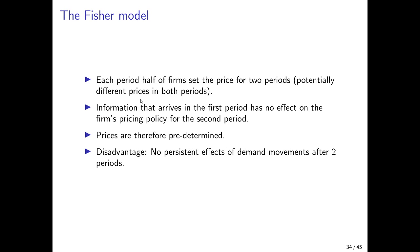One way to introduce nominal rigidities into price-setting behavior is the so-called Fisher model. Here, the assumption is that in each period only half of the firms are able to set their prices, and they have to set the price for two time periods. Every other period, the second half of firms can set their prices again for two time periods. The prices may differ between the two periods, but information that arrives in the first period has no effect on the firm's pricing policy for the second period. If an exogenous shock hits the economy in the first period, the firm cannot adjust the price it already set for the second period — it cannot change the price once it has been set.